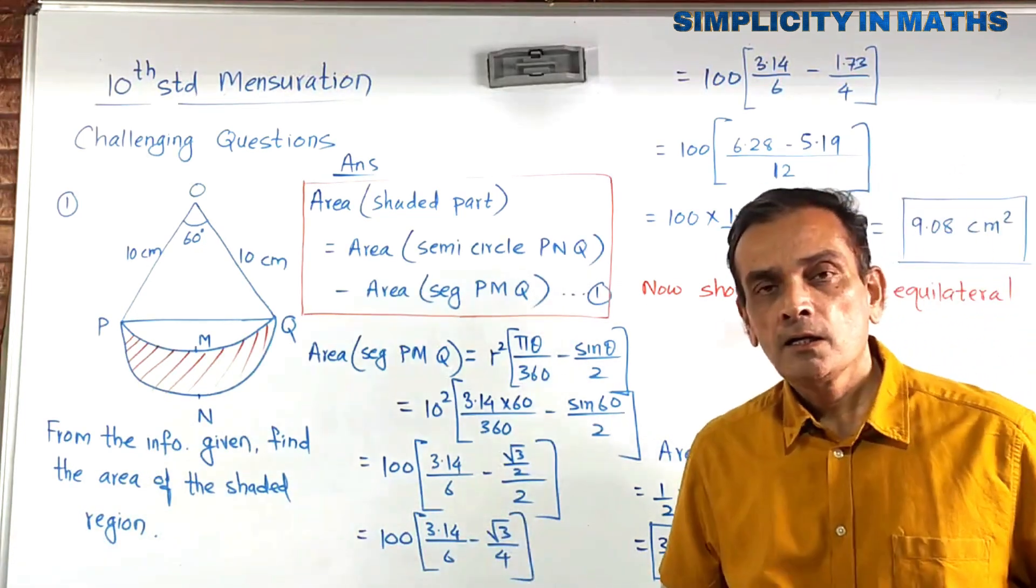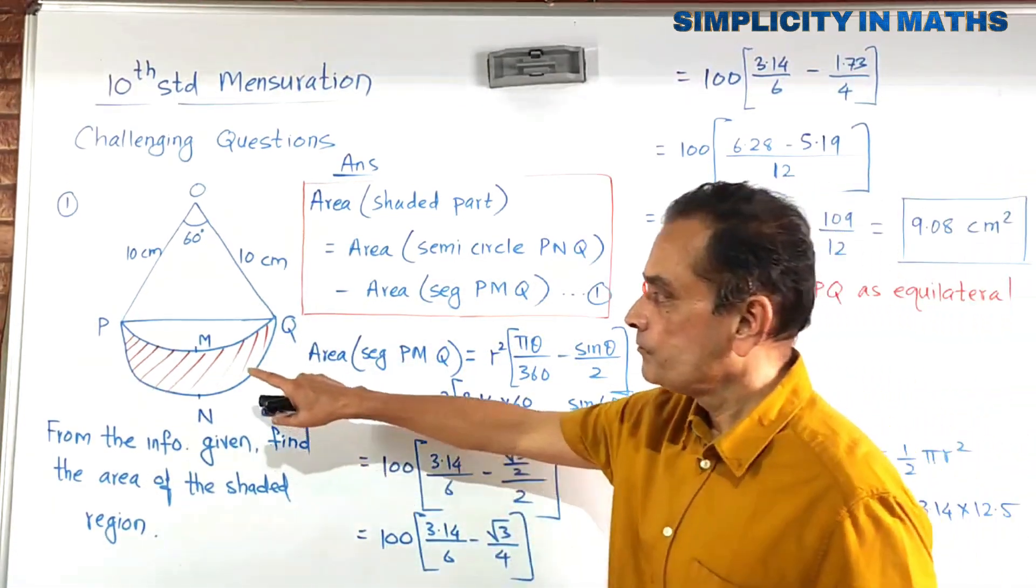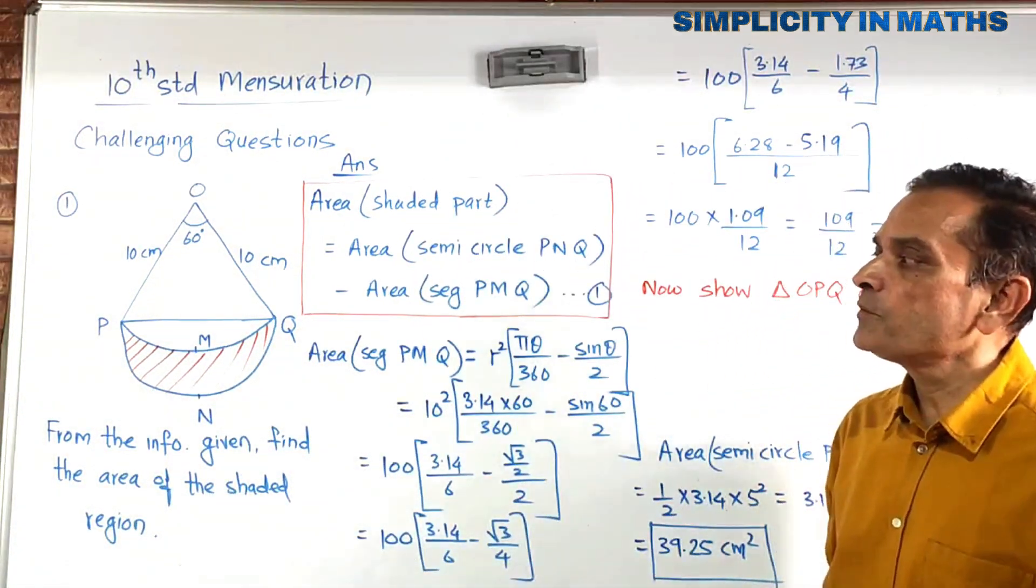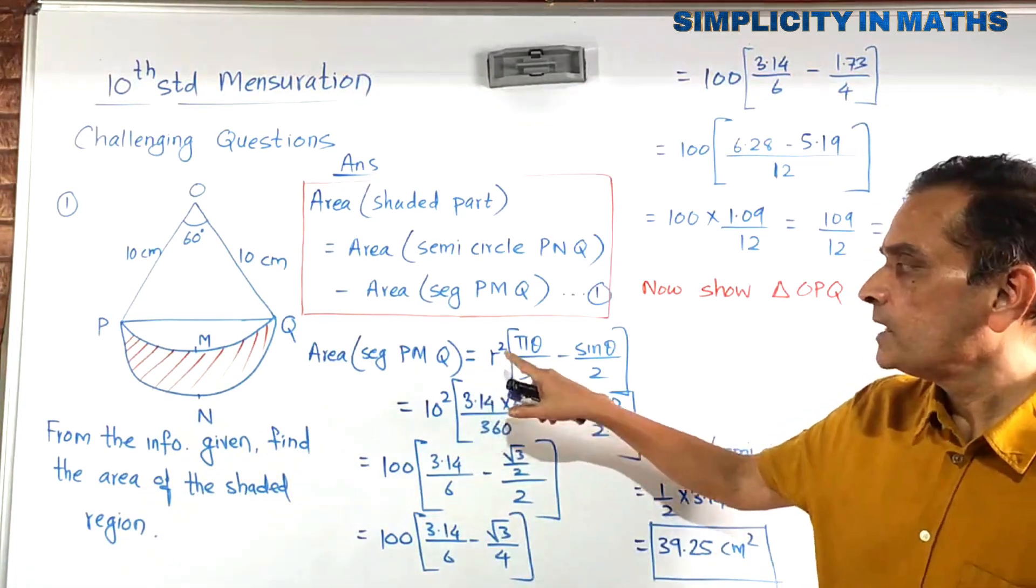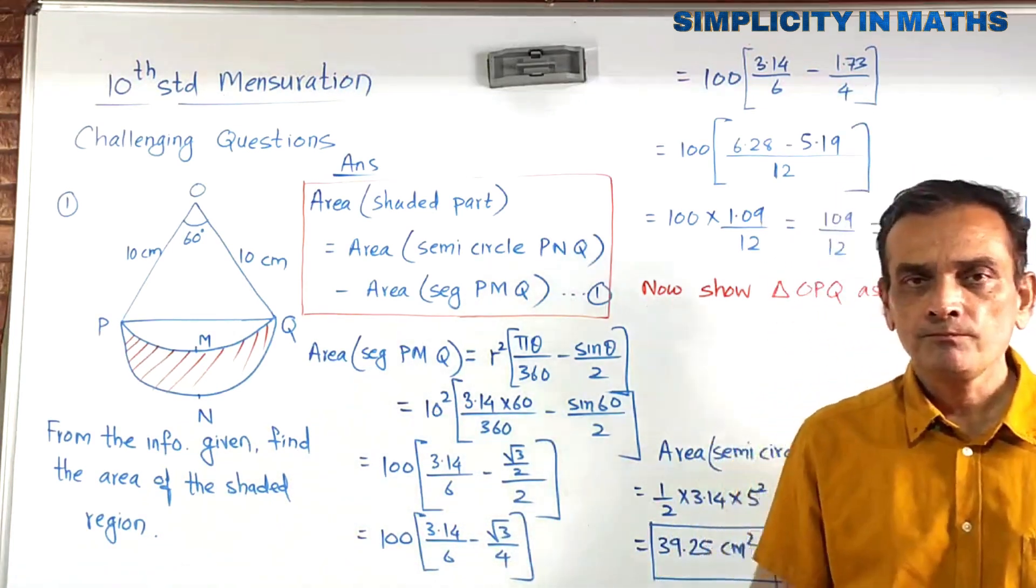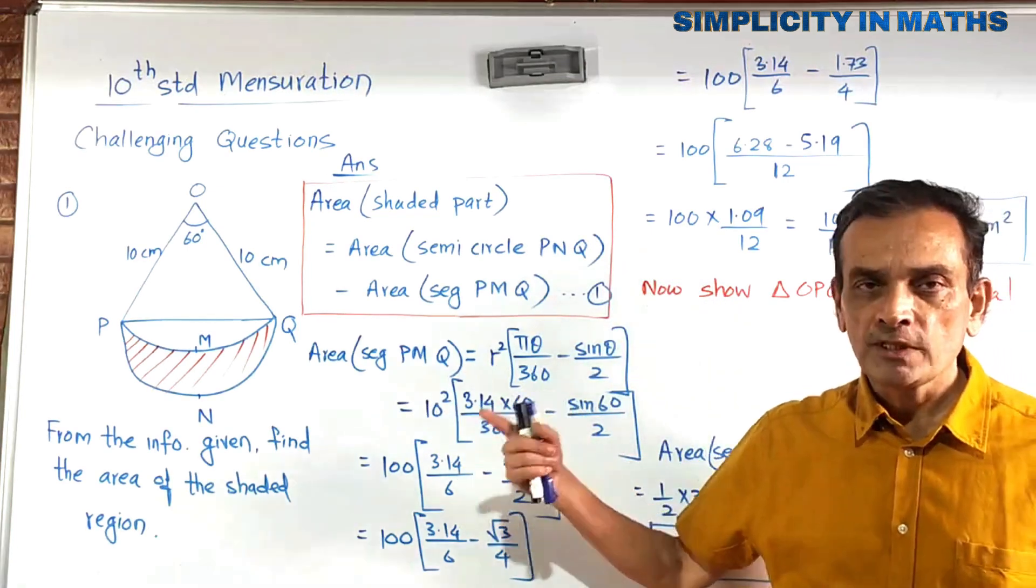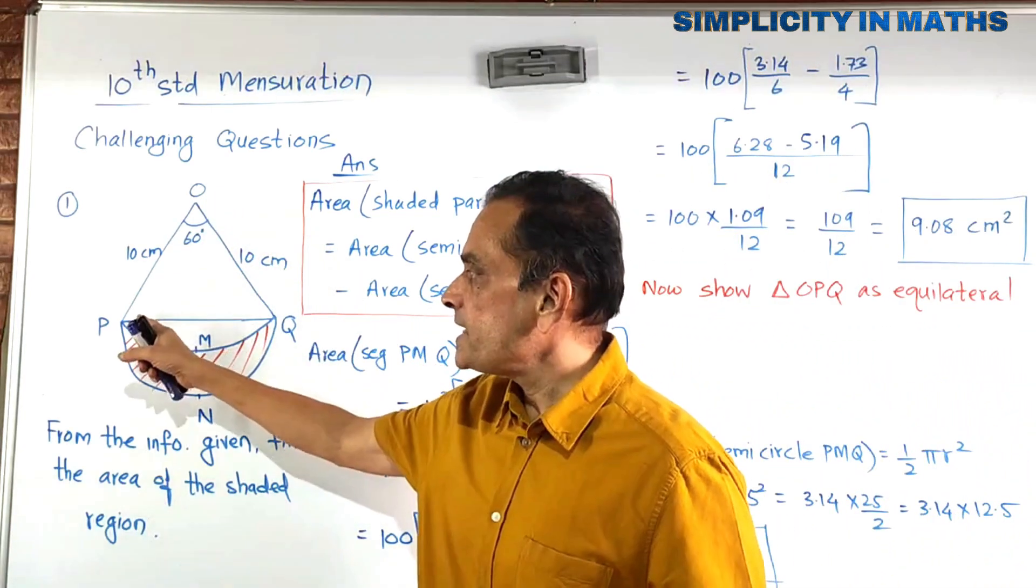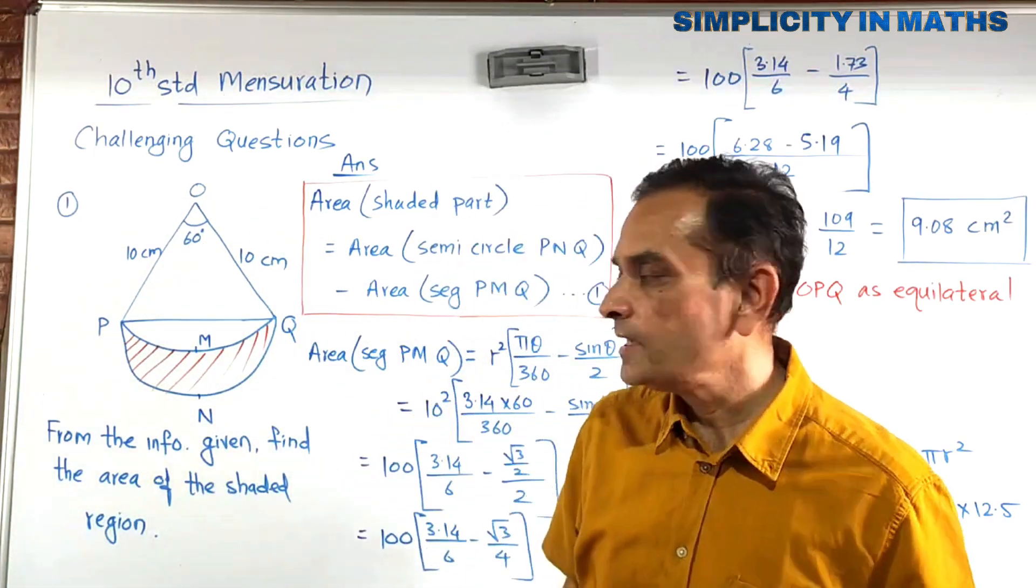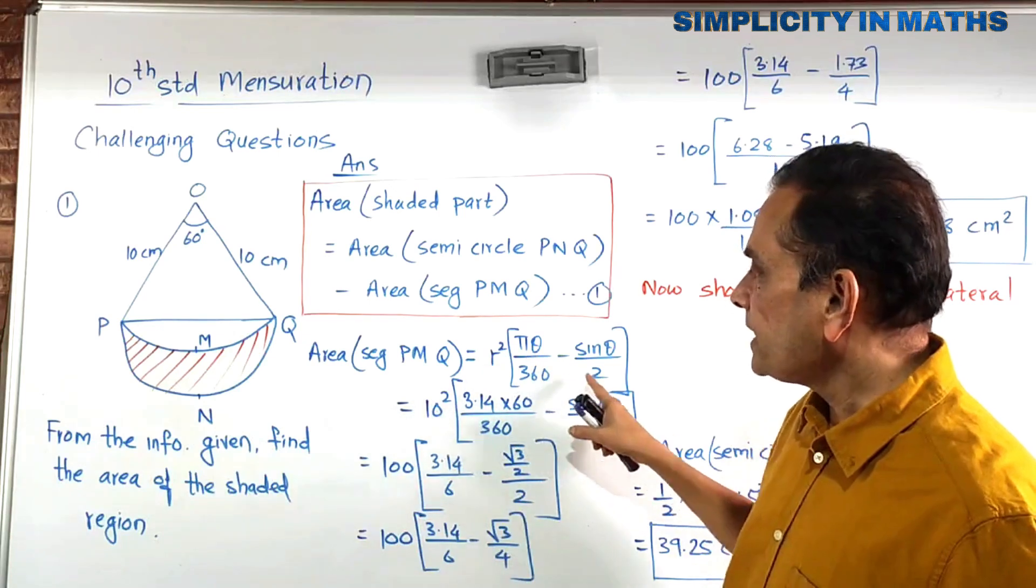Now let us go ahead and see how to solve, how to get area of a segment. So look at the segment here. Area of segment PMQ. So area of segment PMQ if you want to find it, what is the formula? R squared pi theta upon 360 minus sin theta upon 2. This is the standard formula. Now obviously, before writing this formula, in the exam we should write radius is 10, R is 10. This angle is 60 degrees. Then, you should write theta equal to 60.